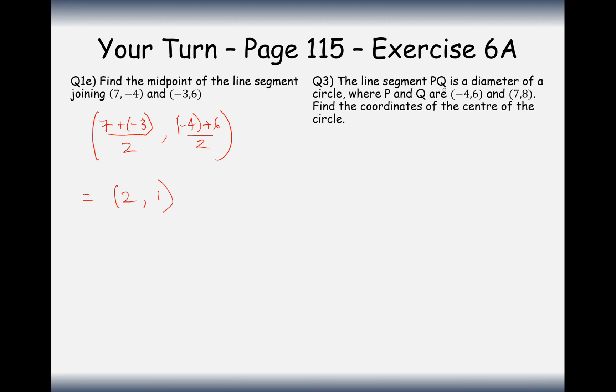Question 3 here, the line segment PQ is the diameter of a circle. P and Q are these values here. Find the centre of the circle. So, this is the exact same question as 1e, pretty much, just given in a context. So, it's going to be minus 4 add 7 divided by 2, and 6 plus 8 divided by 2. So, in this case here, this is going to give me 3 divided by 2, which is 1.5, and 6 plus 8 is 14, divided by 2 is 7. So, this is the centre of my circle.